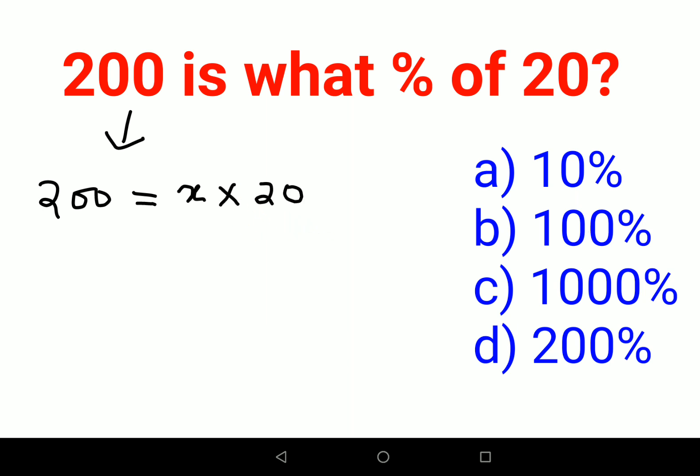Now in order to find the value of x obviously we need to keep all the numbers on one side. So we'll divide both sides by 20. This is cancelling out. So here your answer comes out to be 10.